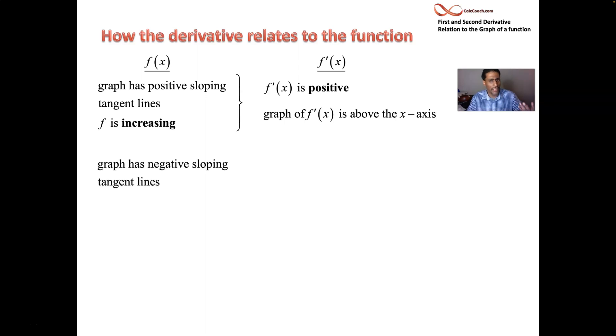What about flipping that? If your function has negative slopes, your function is decreasing. That makes your derivative negative. Looking at the graph of the derivative, you're looking for places where your derivative dips below the x-axis, because that's what it means to be negative, have negative values.